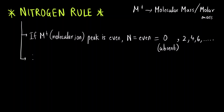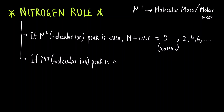The other case is if the M+ value or molecular ion peak is odd, then the value of N is also odd — that is the number of nitrogen will be one, three, five, seven and so on.